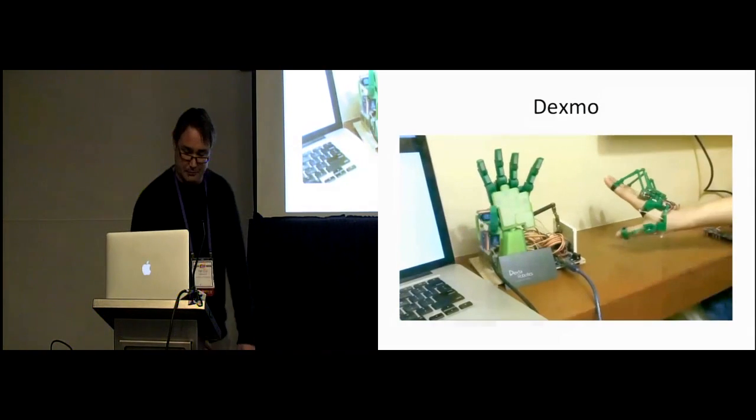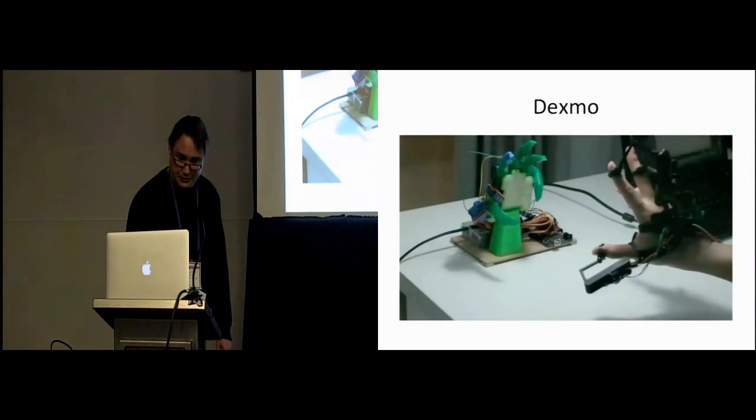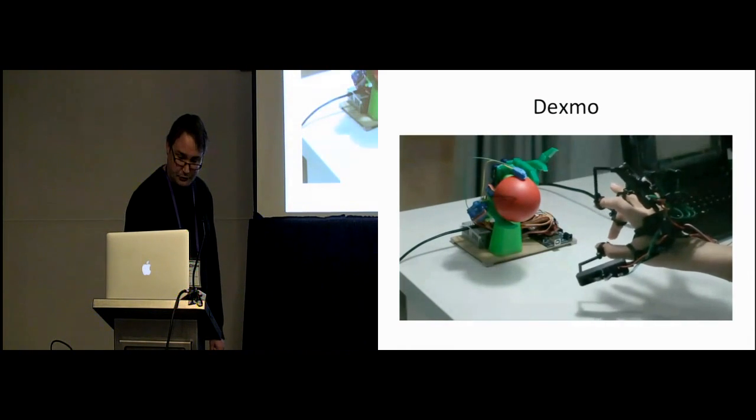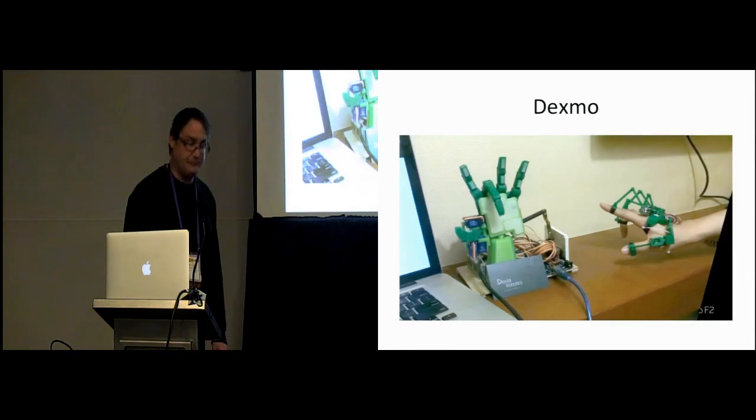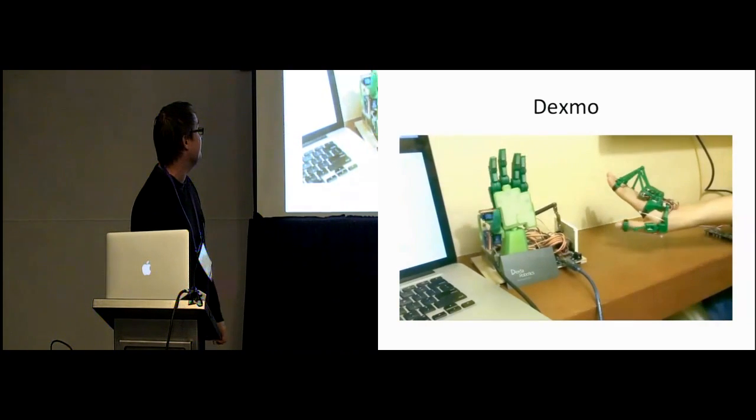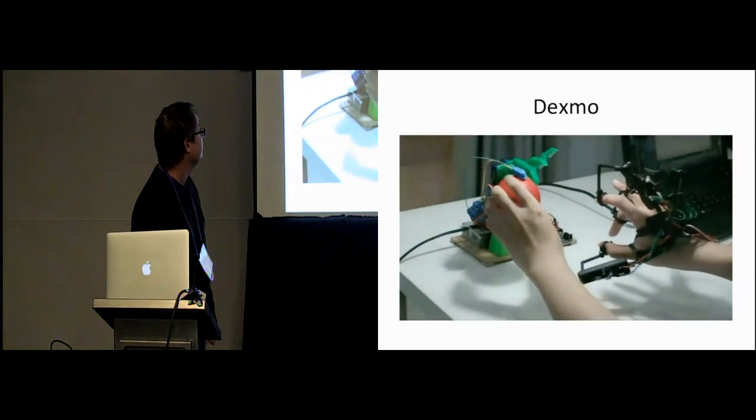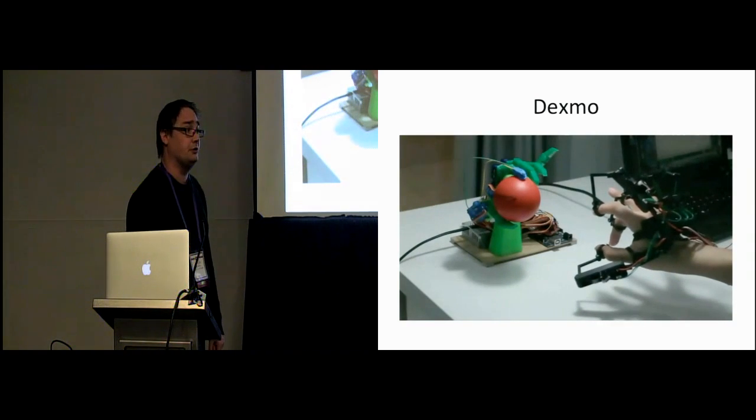So this is an early demo of the device. So you can see the guy moving around. And now there is a ball connected to the exoskeleton. And you can see there at the end that his limb is locked, his finger is locked in place by the exoskeleton. And that's essentially how it works.